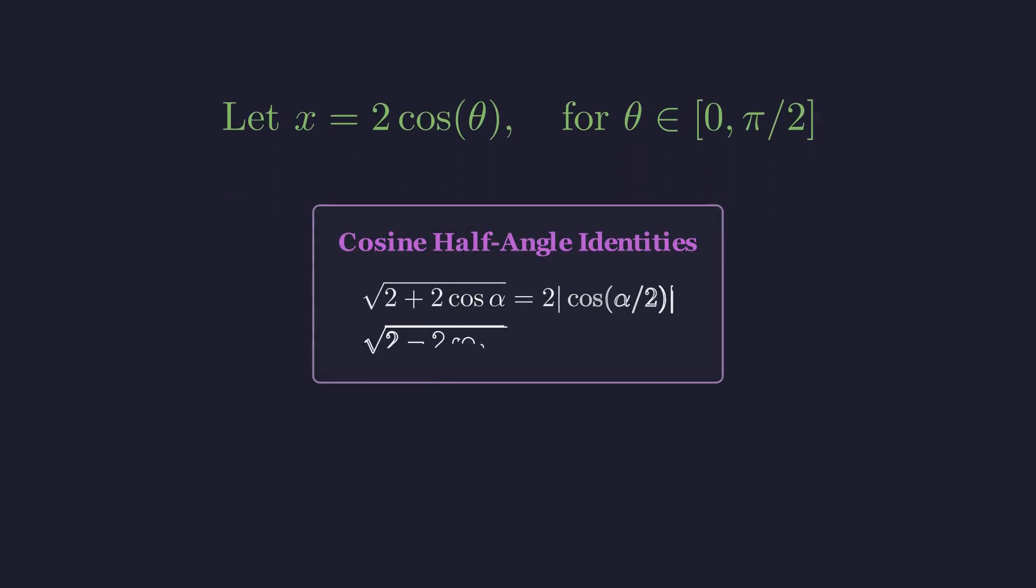This substitution is chosen specifically because it interacts beautifully with the cosine half-angle identities. The structure under the square roots in our problem is a massive clue. Now let's substitute this into the equation, working from the inside out with full detail.